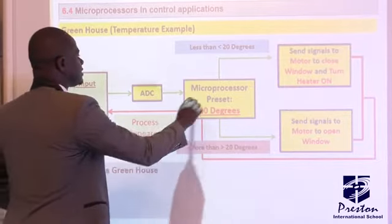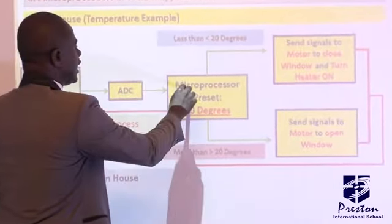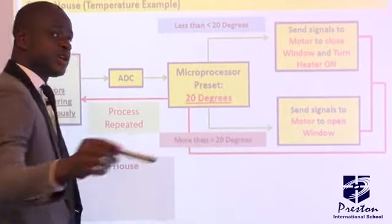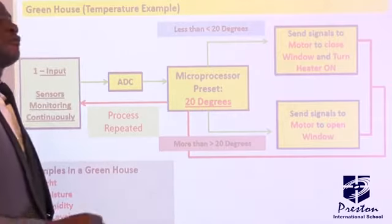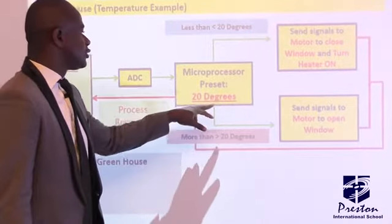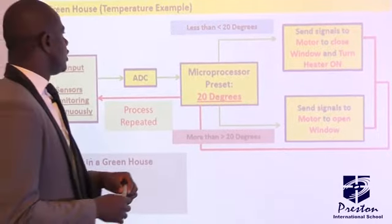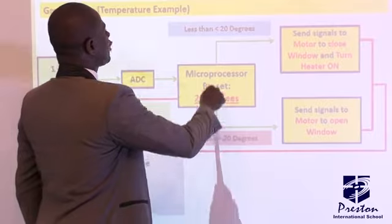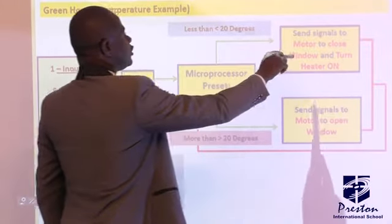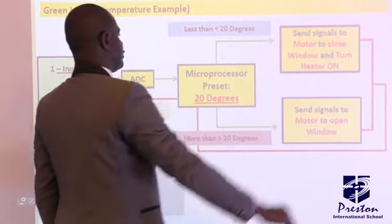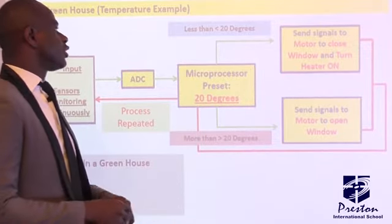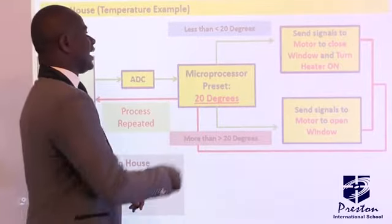The sensor data goes into the ADC, which outputs digital data that the microprocessor — which is also a computer — can understand. Let's say the preset value for that particular greenhouse is 20 degrees, meaning it must constantly be 20 degrees. If it is less than 20 degrees, the microprocessor sends signals to the motor to close the window and turns on the heater, and it continues to constantly monitor.